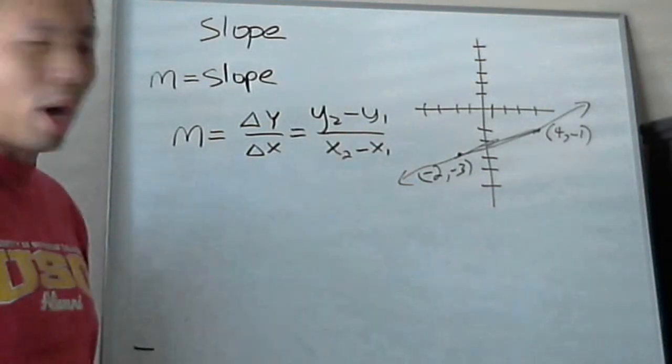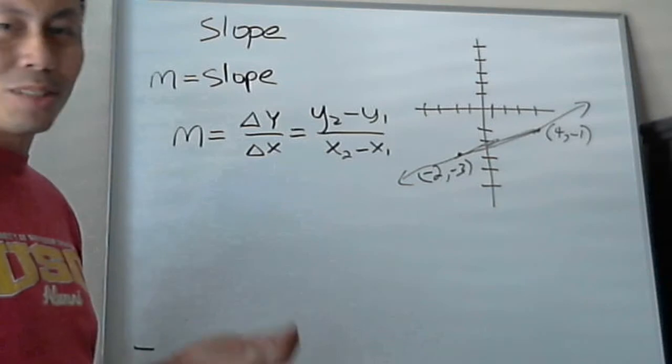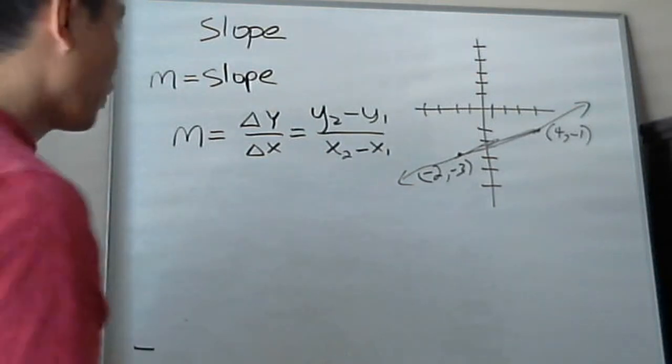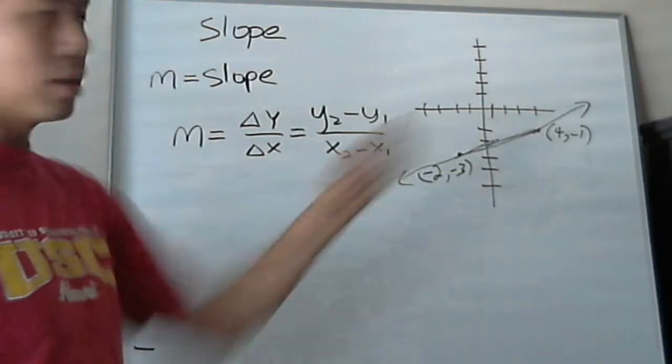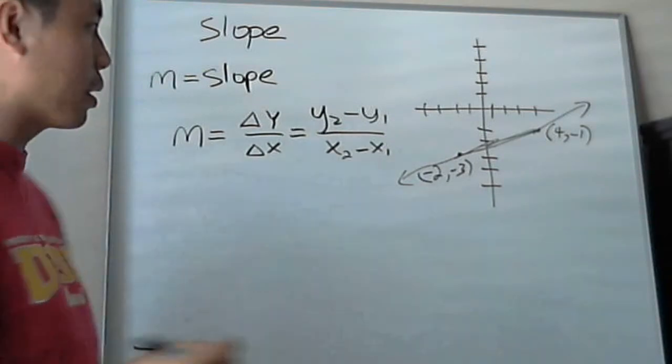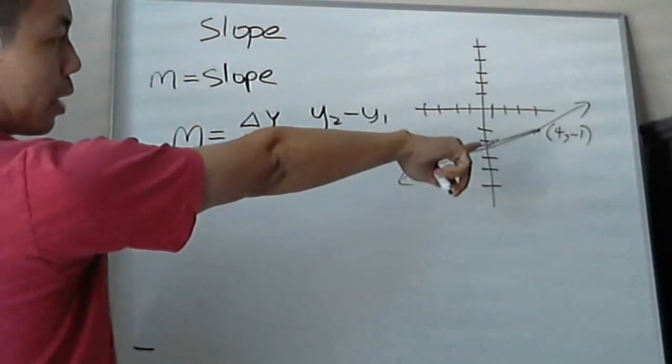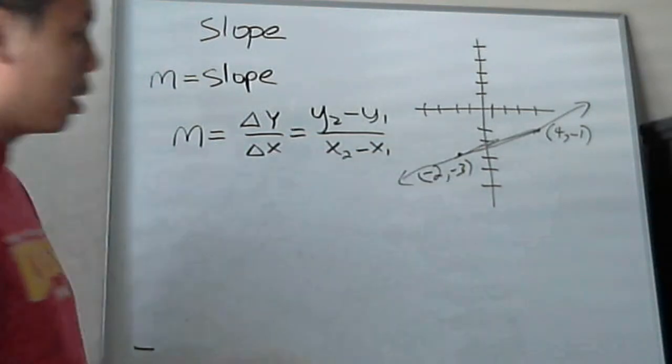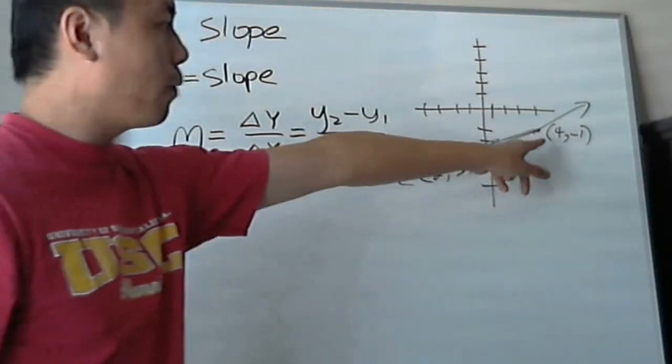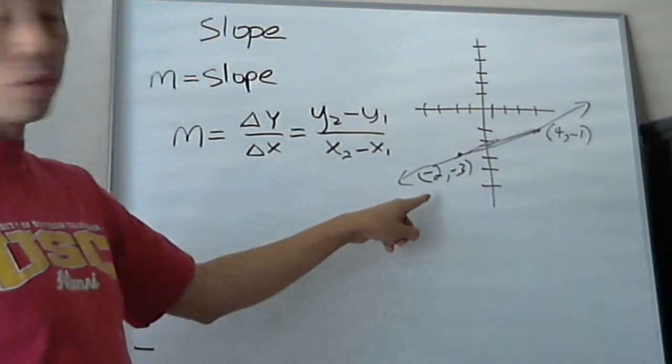So what does Y2 and Y1 mean? What are these X2, X1, what do they all refer to? Well, here's an example I can use to illustrate. Let's say you need to find a slope between point 4, negative 1, and negative 2, negative 3.